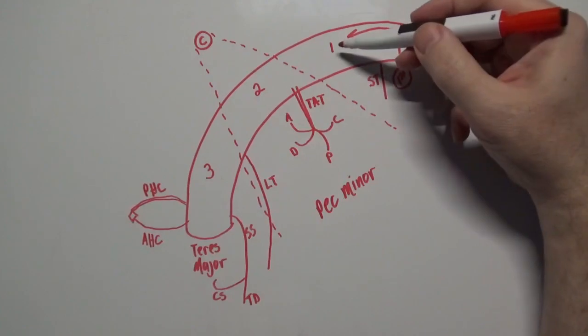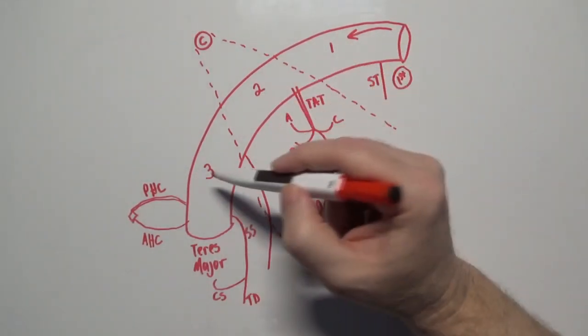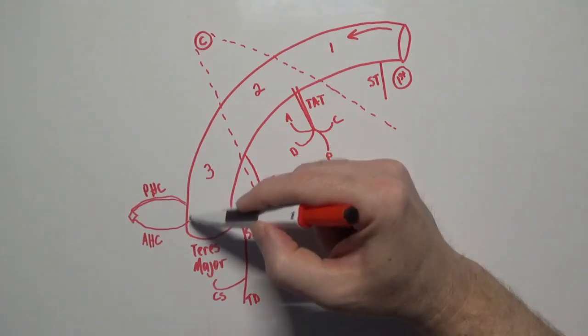Once you can draw it without looking at anything for help, you'll be ready to identify these vessels in your dissections. So let's go ahead and get started.